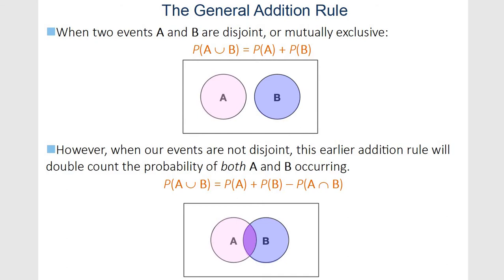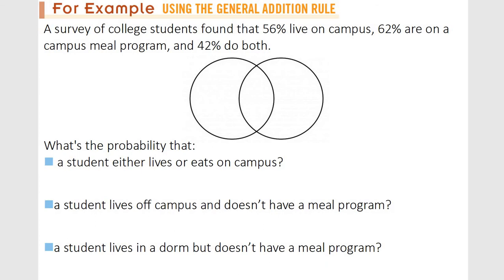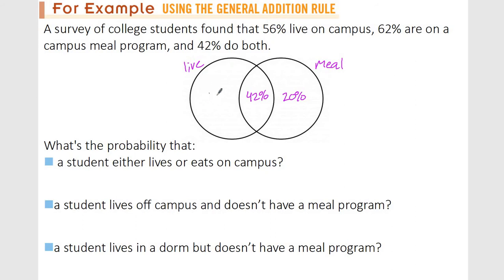Alright, it's always helpful to do an example. Let's see if you can set up the Venn diagram. We have live on campus, on a campus meal program or not. So if they live there and if they have a meal program — 42% do both. So this is going to have 42%. I know that 62% have a meal program; I already have 42% accounted for, so this is going to be 20% have a meal program. Then we have 56% live on campus; I already have 42% in that circle, so we take away 42% and we get 14%.